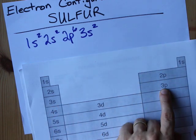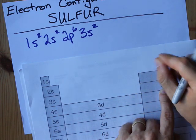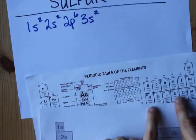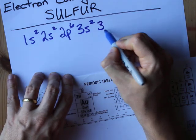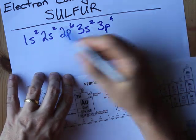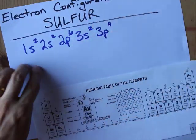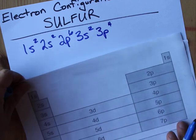Now you have 3P. That's where I'm going to need to stop. And remember, it was the fourth element in that block. One, two, three, four. So you're going to write 3P4. And that's the full electron configuration for a neutral sulfur atom.